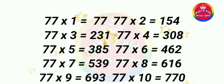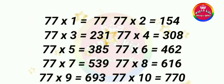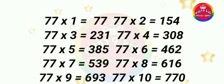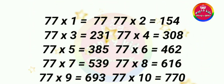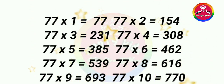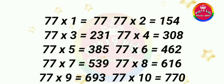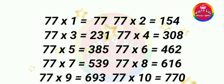77 times 1 is 77. 77 times 2 is 154. 77 times 3 is 231. 77 times 4 is 308. 77 times 5 is 385. 77 times 6 is 462. 77 times 7 is 539. 77 times 8 is 616. 77 times 9 is 693. 77 times 10 is 770.